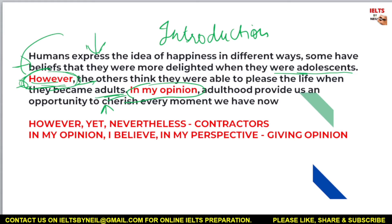To show contrast, we use contrast linking words. There are three words you can use: 'however,' 'yet,' and 'nevertheless.' For example: 'They were more delighted when they were adolescents — yet the others think...' or 'nevertheless the others think...' You can use any of these three words. Whenever you want to show a contrast between two situations, use these contrast linking words: however, yet, or nevertheless.